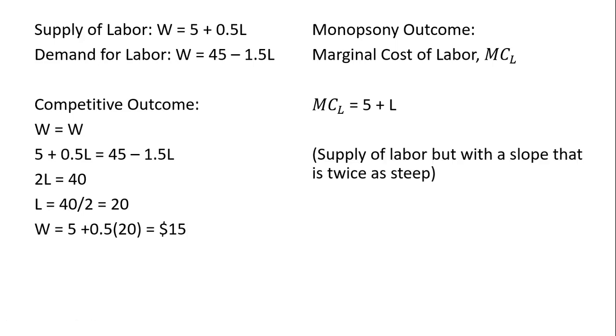Next thing we do, we take that marginal cost of labor, and we see where it intersects the labor-demand curve. So we're going to set 5 plus L equal to 45 minus 1.5L. I'm going to collect the L terms here, so adding 1.5L to both sides, we're going to get 2.5L. And then subtracting 5 from both sides, we get this result, dividing through by 2.5. The monopsony outcome is 16 units of labor, which will be less than the competitive outcome.